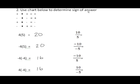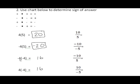Step two: use the chart to determine the sign of your answer. Positive four times positive five — positive times a positive gives a positive answer. Negative four times positive five — negative times a positive gives a negative answer. Negative four times negative four — negative times a negative gives a positive answer. Positive four times negative four — positive times a negative gives a negative answer.